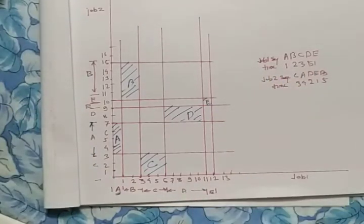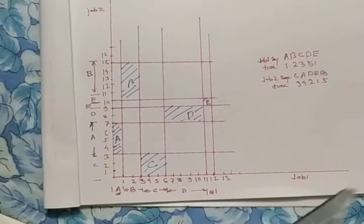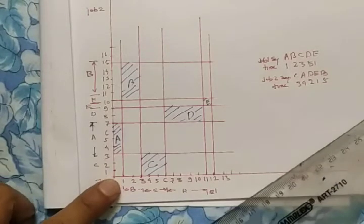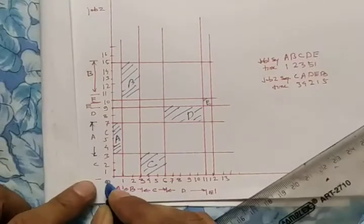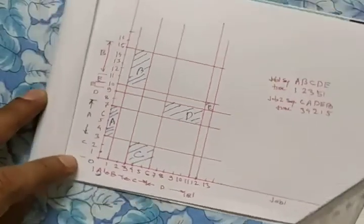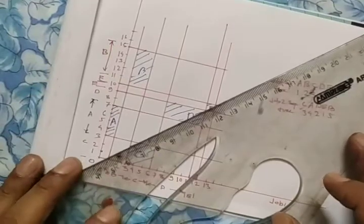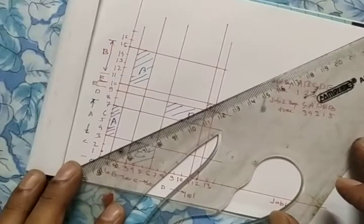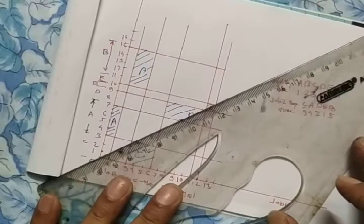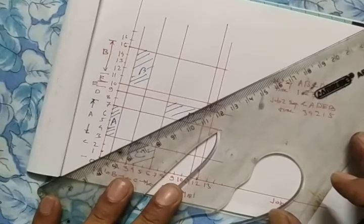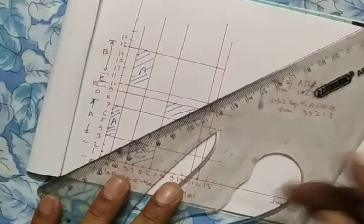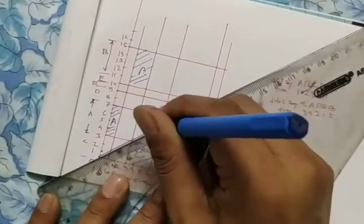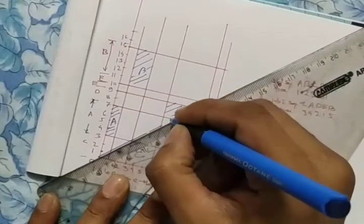After identifying all machine blocks, draw a 45-degree line passing through the origin. This line represents simultaneous processing of both jobs.